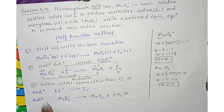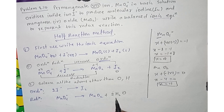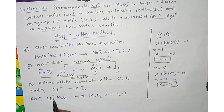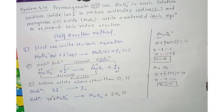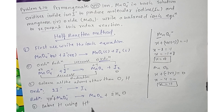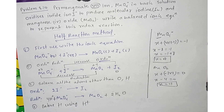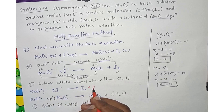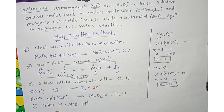In the next step, balance hydrogen. Add 4 H⁺ to the left side to balance the 4 hydrogens introduced by the water molecules. Now proceed to Step 4: balance the charge using electrons. For the reduction half-reaction, check the charge on MnO4⁻ with the added H⁺.